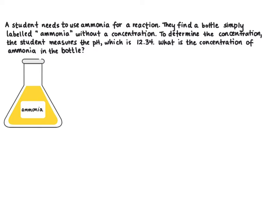So the first step in any weak acid or weak base problem is to write out our reaction. So ammonia is NH3. When it reacts with water it's going to accept a proton from water to form NH4+ and hydroxide.